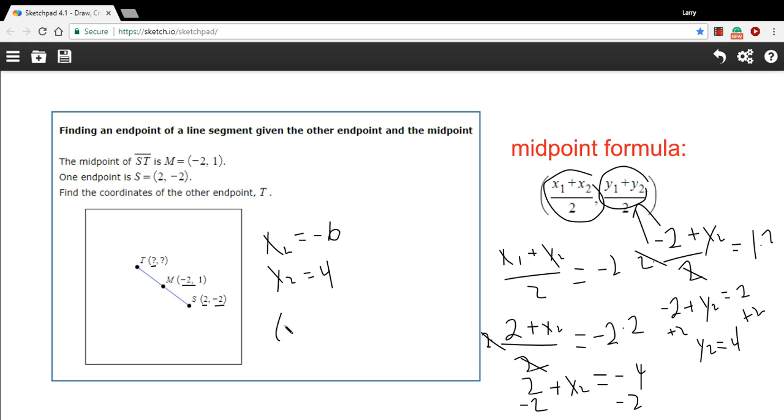So our point then is negative 6 comma 4. So that's how to kind of use the midpoint formula in reverse to find an endpoint when you have the midpoint.